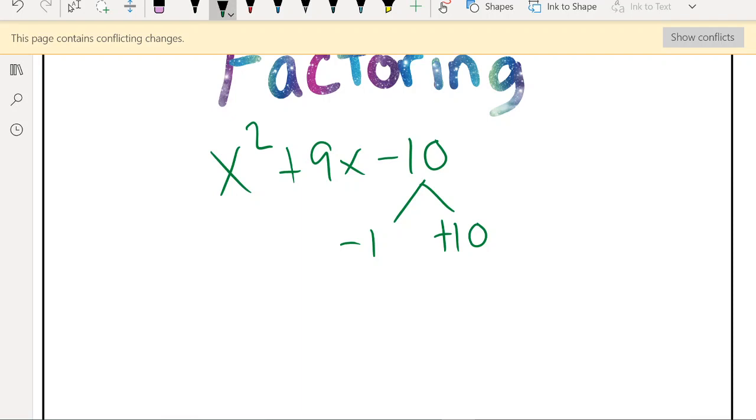Negative 1 plus 10 is positive 9, so that works, check. And then negative 1 times 10 is negative 10, so second check. And I only need those two checks because the x squared is just going to happen. Now, whenever there's a number in front of x squared, that's a different story. But I think I'll do another series on those sorts of factors another time. But anyway, so we're done. That's it.